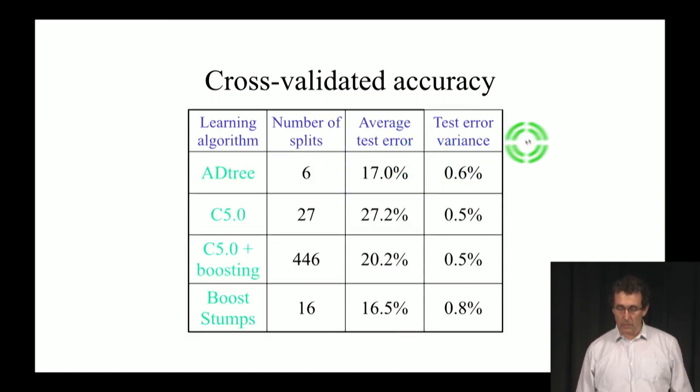Here are actually a comparison of this, on this data set of different algorithms. Here is AD trees, here is C5.0, which is a tree learning algorithm. Here is C5.0 plus boosting. And here is boosting stumps. Boosting stumps is basically what we saw before, just using the simplest kind of one-level trees. What you see is that the smallest one, in terms of number of splits, is the AD tree, which makes it the easiest to understand because there's less rules to interpret. And its error, test error, is very good and doesn't fluctuate too much. This is the variation of the test error.